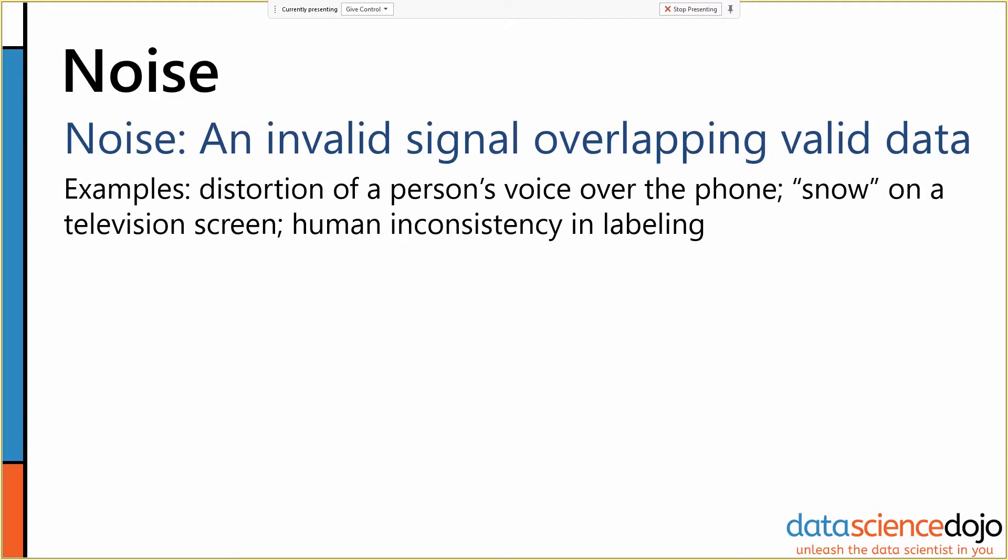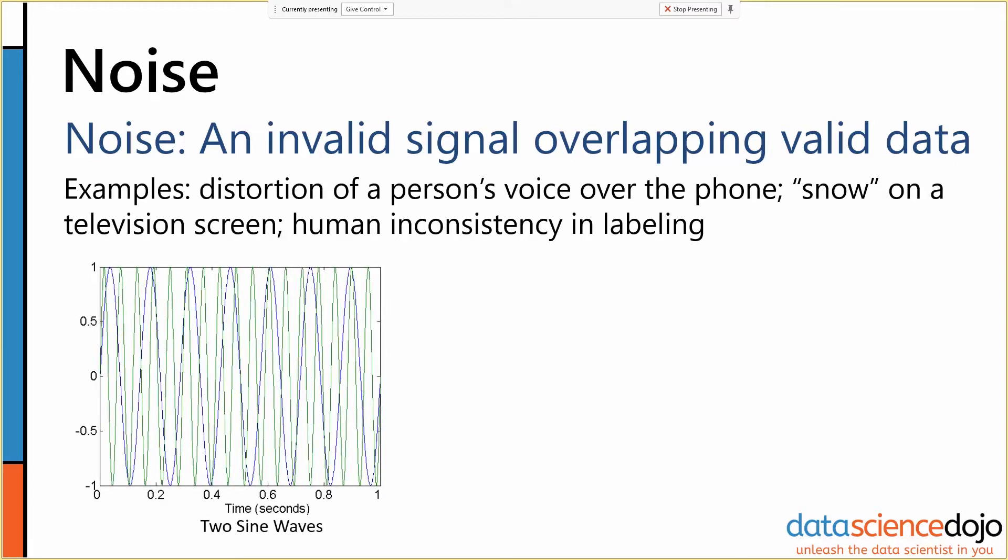So, as sort of a practical example of what noise can do when there's a lot of it, this is a pretty straightforward signal. We've got two sine waves here with different frequencies, but the same amplitude. There's a blue one and a green one.